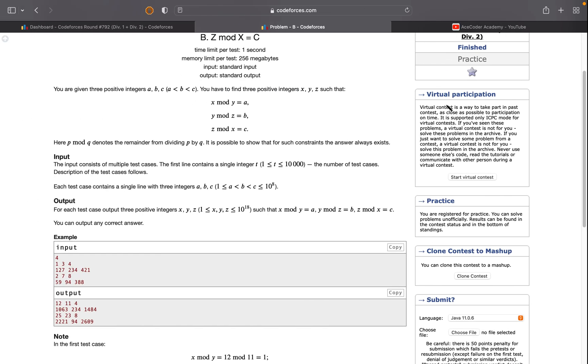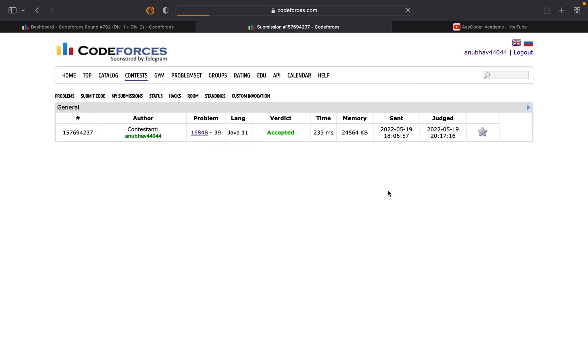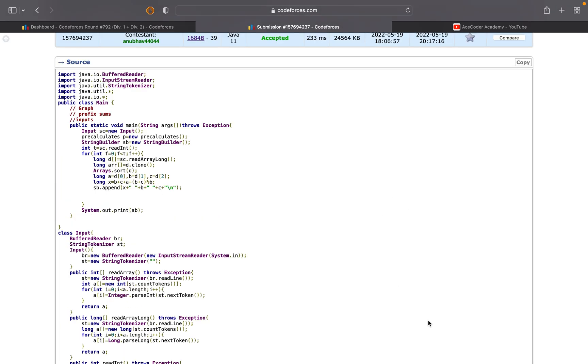So now let's have a look at the code. So here I took the input for A, B, and C. You can ignore these two lines.